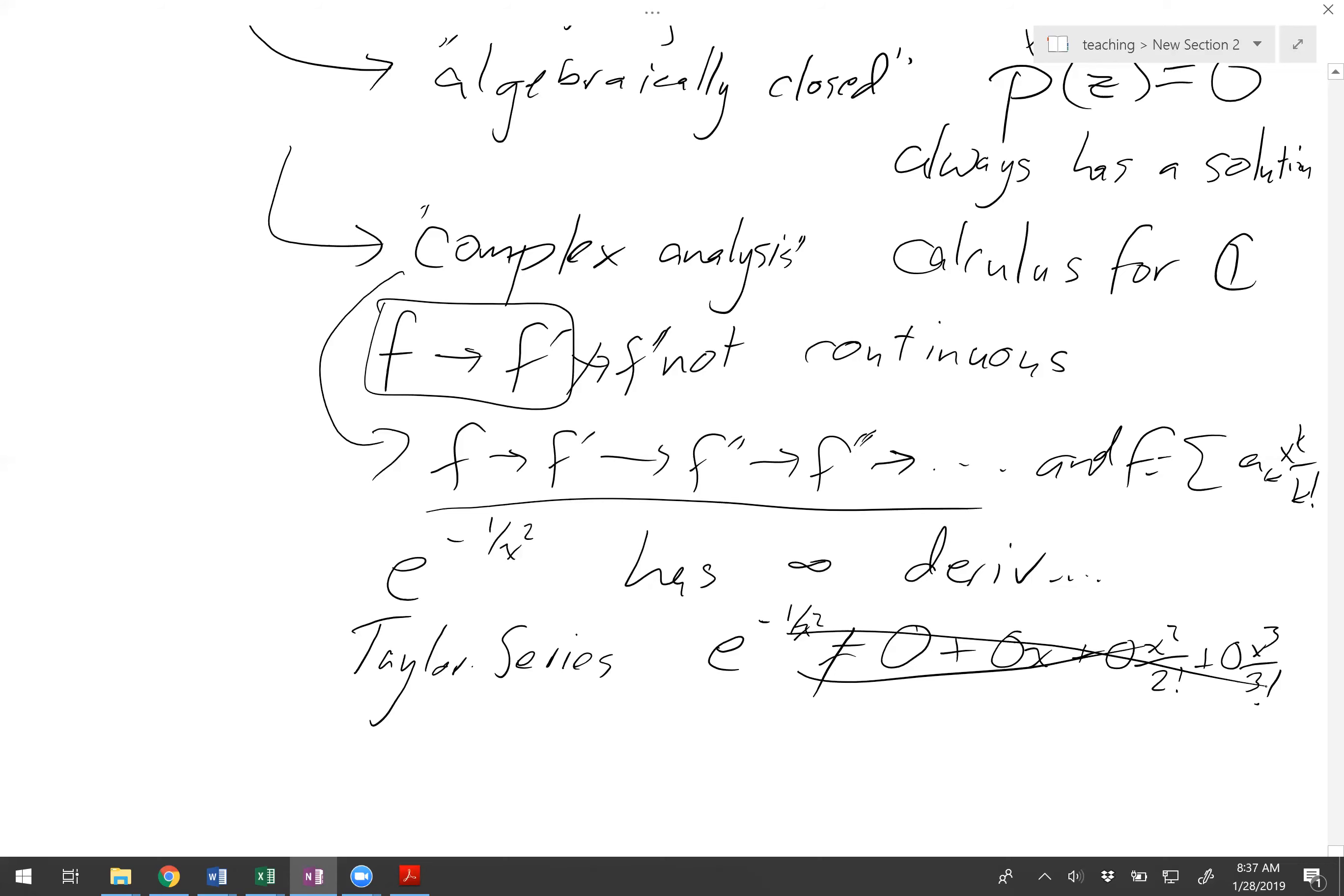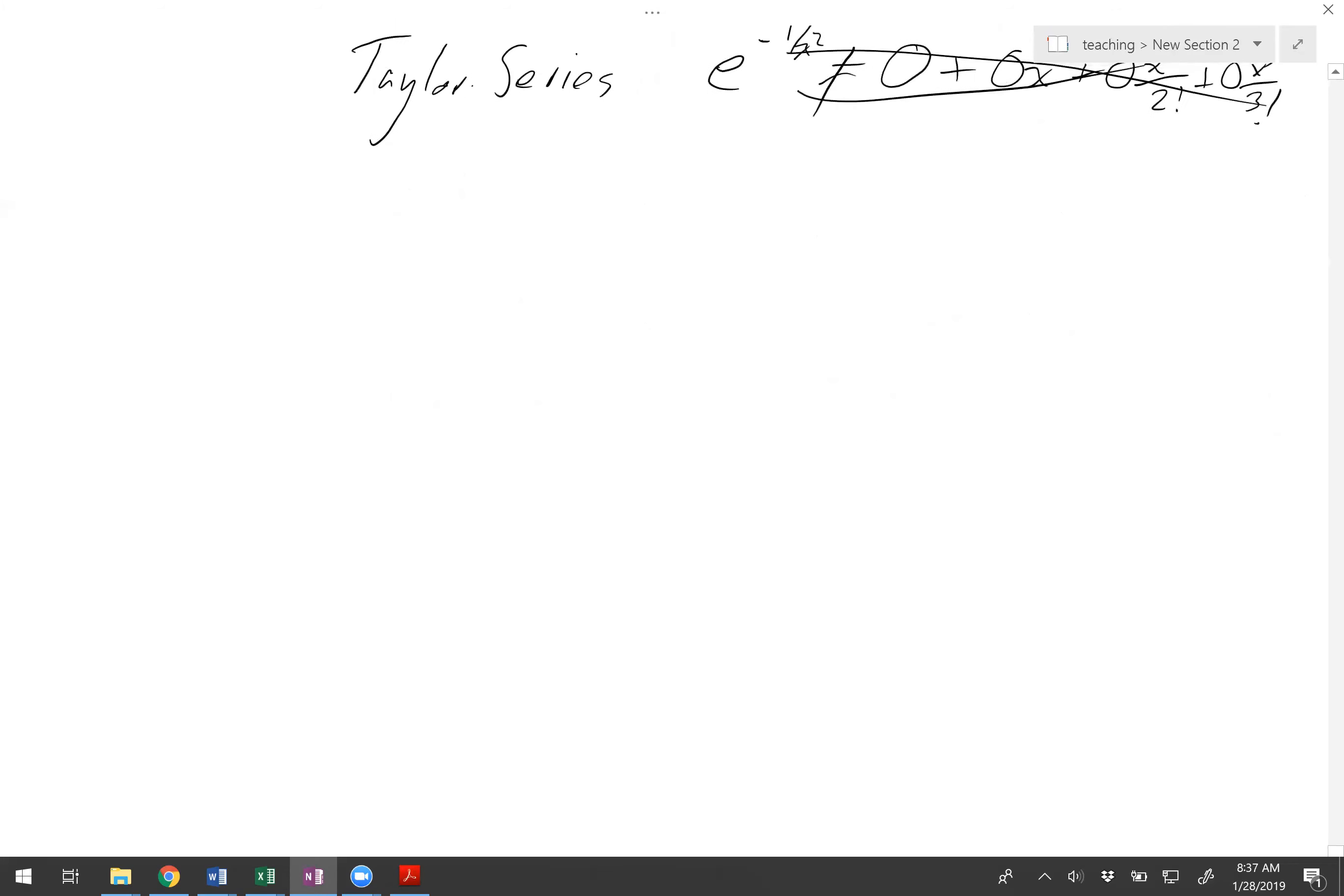So anyway, the complex numbers winds up being a much more useful place to work in algebra because all the polynomials have solutions. It winds up being a much easier place to work for calculus because basically as soon as you have a derivative, everything you want to do in calculus works. You don't have to worry about any of these pathologies that you have for real numbers. So but anyway, that's kind of all on the side. The point was, the complex numbers are weird because you have these two parts that there's nothing you can do to put them together.